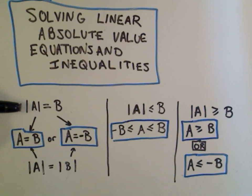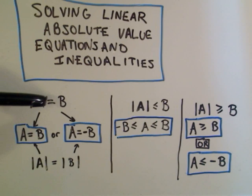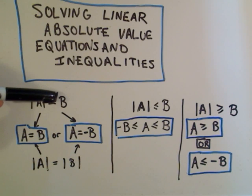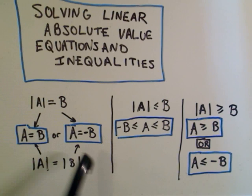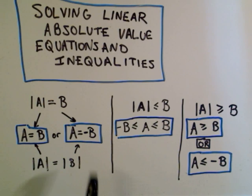The first case says if you have the absolute value of something equal to something else, the thing on the right hand side is either going to have to be zero or positive or there's going to be no solutions. But basically you have to solve two equations. One says you just remove the bars, set A equal to B. The other says you remove the bars and tack a negative onto the right hand side.